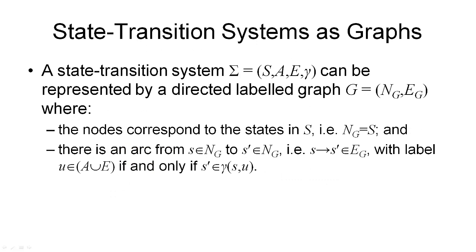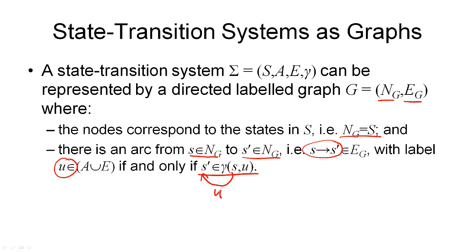Another way to look at a state transition system is to view it as a graph. Suppose we are given a state transition system S, A, E, and gamma. Then we can define a directed labeled graph G that consists of nodes NG and edges EG. The nodes of this graph are simply the world states, so NG is equal to S. The edges correspond directly to the state transitions defined by the state transition function. We have an arc from a node S to another node S prime, labeled with U — which is either an action or event — if and only if S prime is the result of applying U in S. So a state transition graph consists of nodes that correspond to world states and edges that correspond to state transitions.